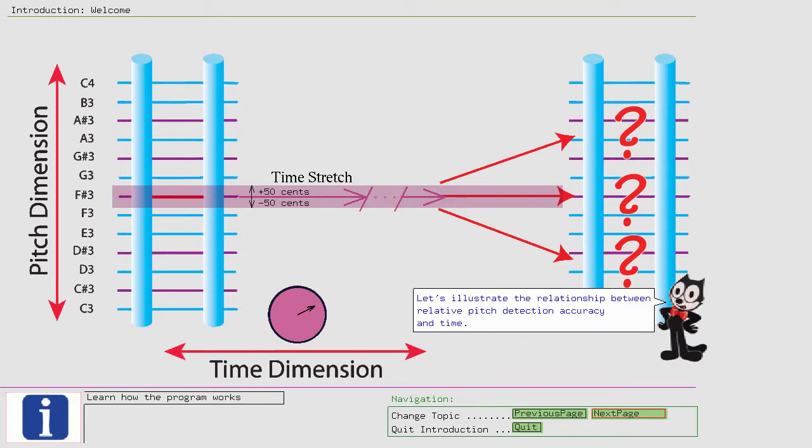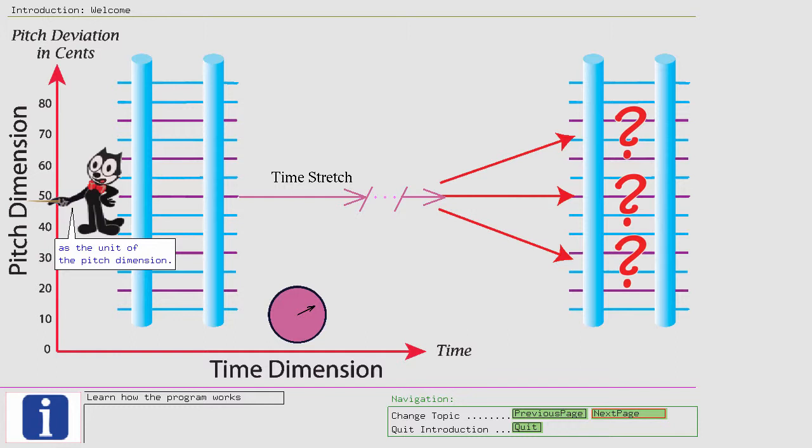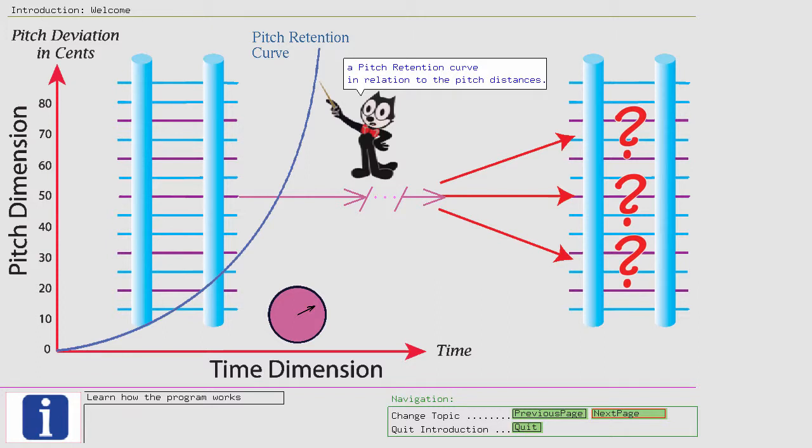Let's illustrate the relationship between relative pitch detection accuracy and time. To do this, we make the pitch deviation, or distance, of two sounds as the unit of the pitch dimension. In this way, we can build a pitch retention curve in relation to the pitch distances. This curve shows how accurately we can detect pitch deviations over time.